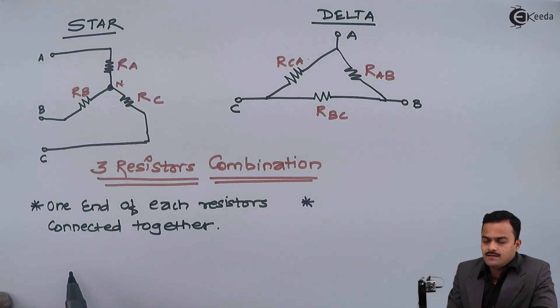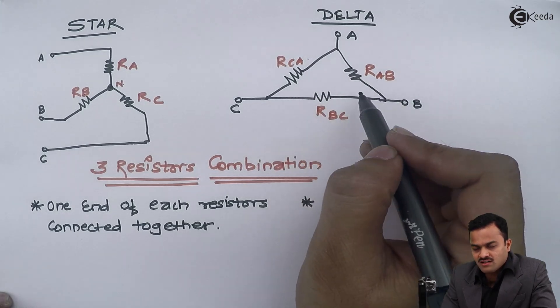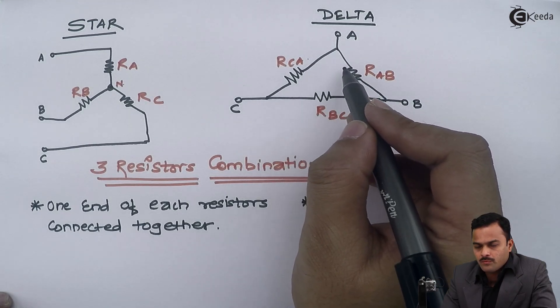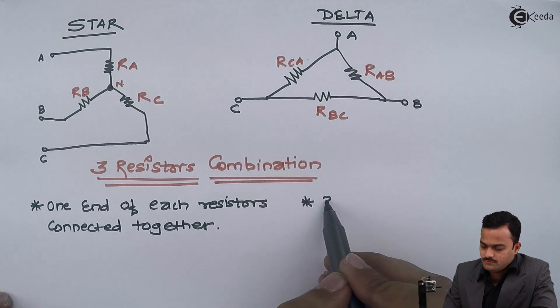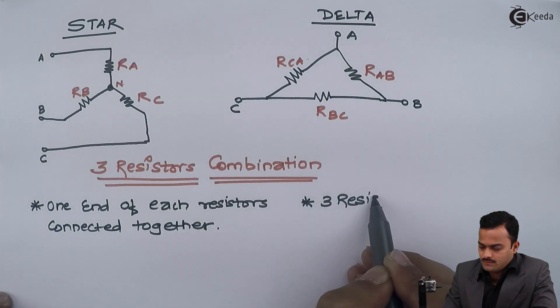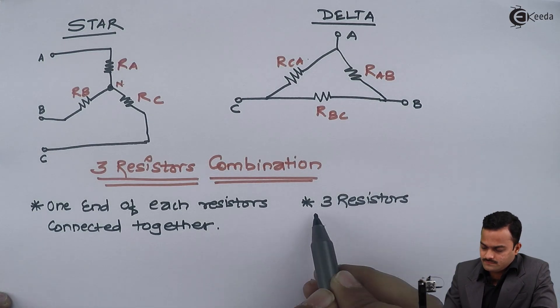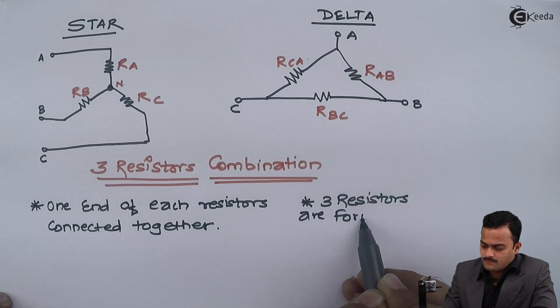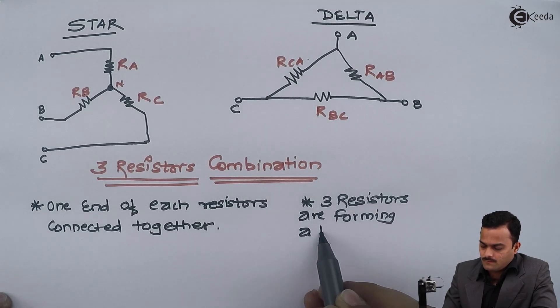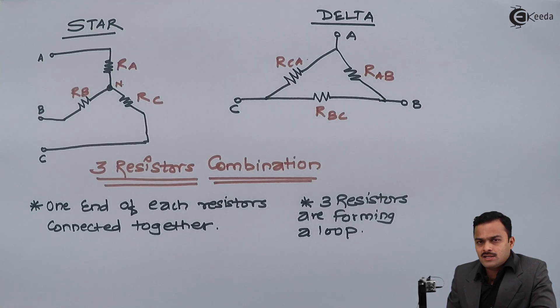Delta. Three resistors are connected such a way that one after the other so that it is forming a loop. So I can say three resistors are forming a loop. Then those three resistors are considered to be connected in delta.